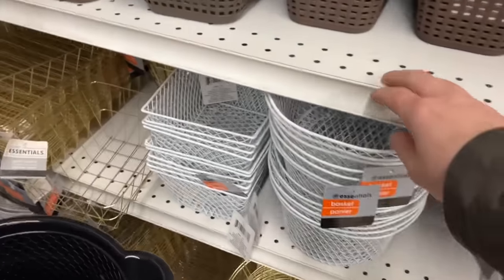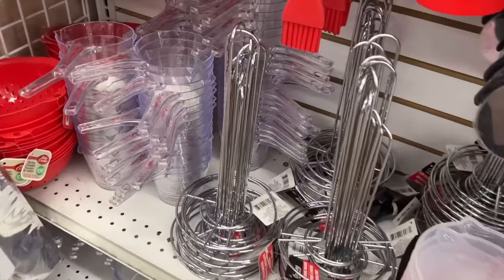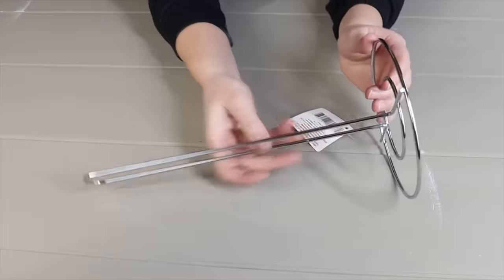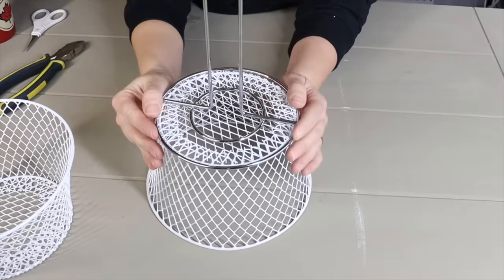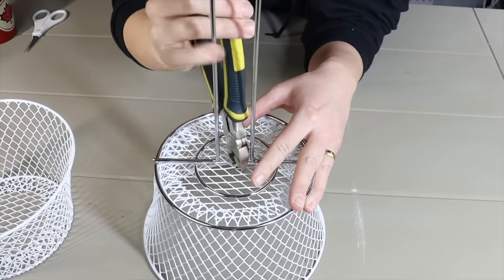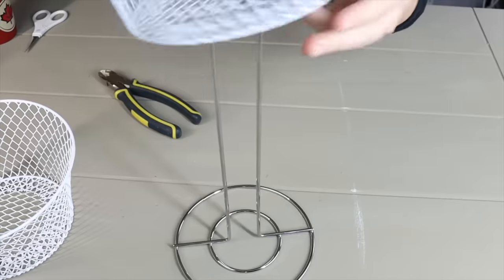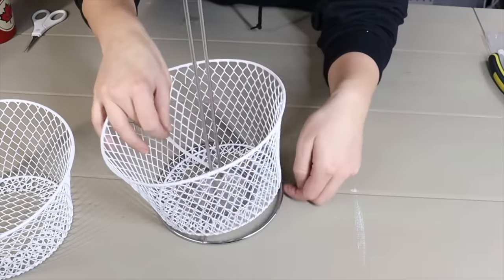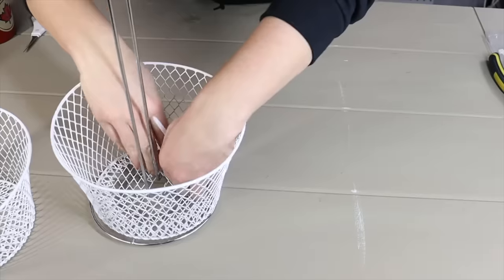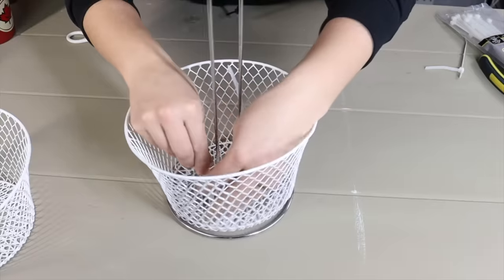Next time you're at Dollar Tree, scoop up some of the white wire baskets and grab yourself a paper towel holder. Then take the paper towel holder and place it on the bottom and cut out the wire basket just in the middle. Slide it over top and secure it in place with some zip ties at the bottom.